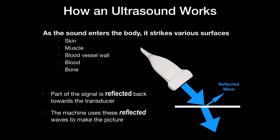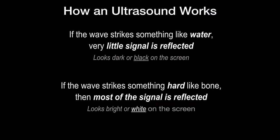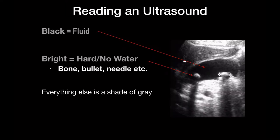Think about looking in a window where the sun's shining — you can see a little bit through it, but you can also see your own reflection. Skin, muscle, and blood vessels all have different fluid density. The closer the density is to fluid, the blacker it appears. The farther away it is, the brighter it appears. Bone and air are the reflectors — we often say they're the enemies of ultrasound because they reflect so much of the sound wave that we can't see anything behind them. We like fluid because we can see through it.